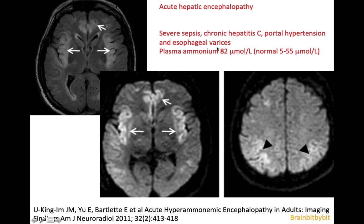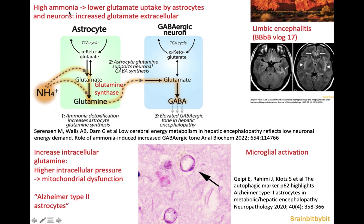The increased ammonium is important in the pathogenesis of hepatic encephalopathy, and if the ammonium is not increased, you should reconsider your diagnosis. This high ammonium causes the astrocytes and neurons to take up lesser glutamate. The ammonium is converted by an astrocyte-specific enzyme called glutamine synthase into glutamine, and glutamine increases the intracellular pressure in the astrocytes and leads to mitochondrial dysfunction.